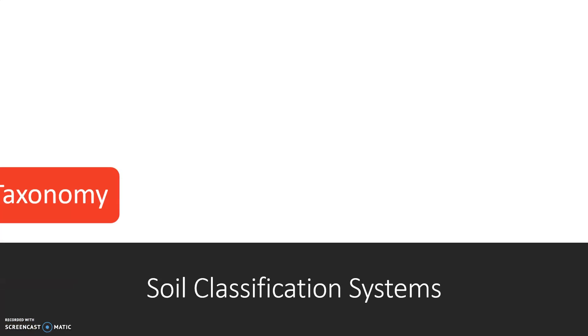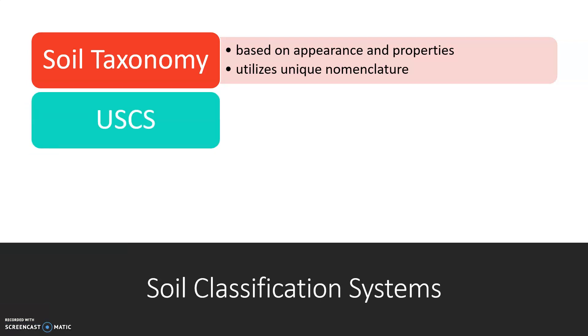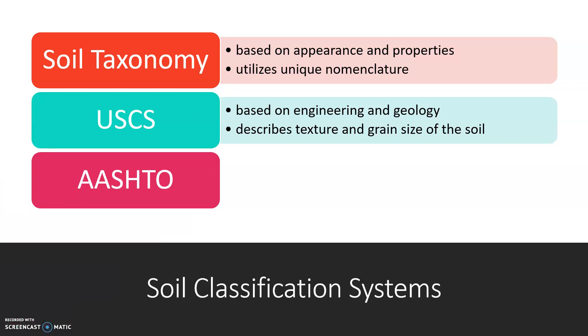There are multiple soil classification systems including soil taxonomy, the USCS, and the AASHTO. Soil taxonomy is based on the appearance and properties and utilizes unique nomenclature. The USCS is based on engineering and geology and describes the texture and grain size of the soil. The AASHTO is based on engineering properties and is divided into seven categories.